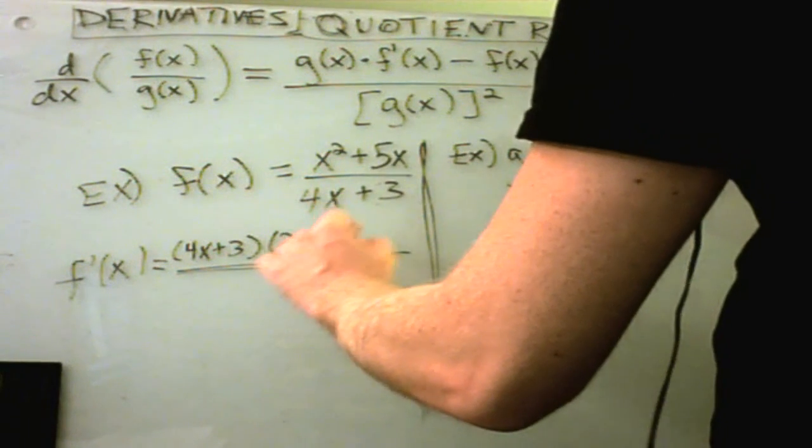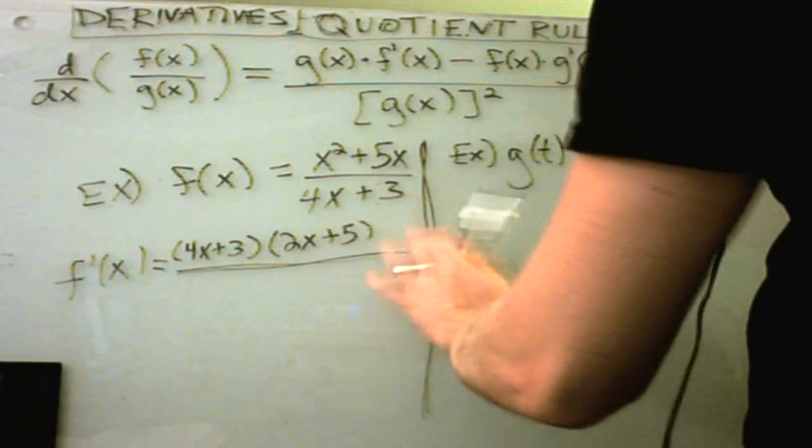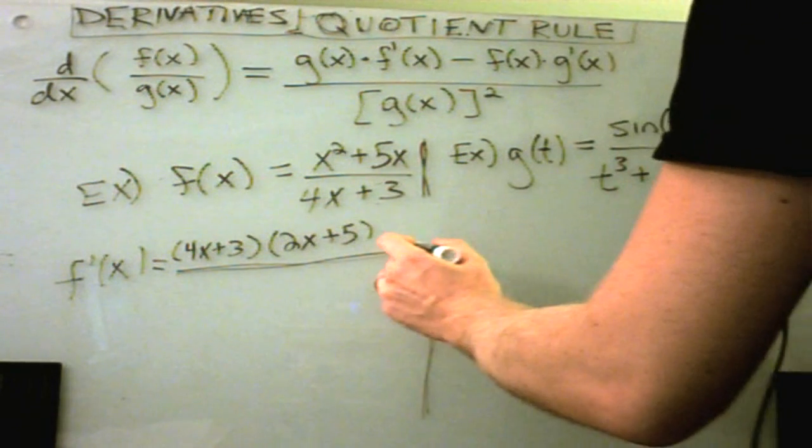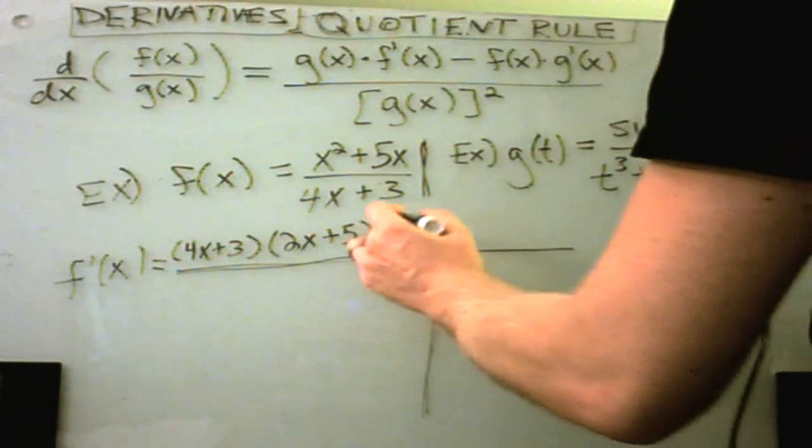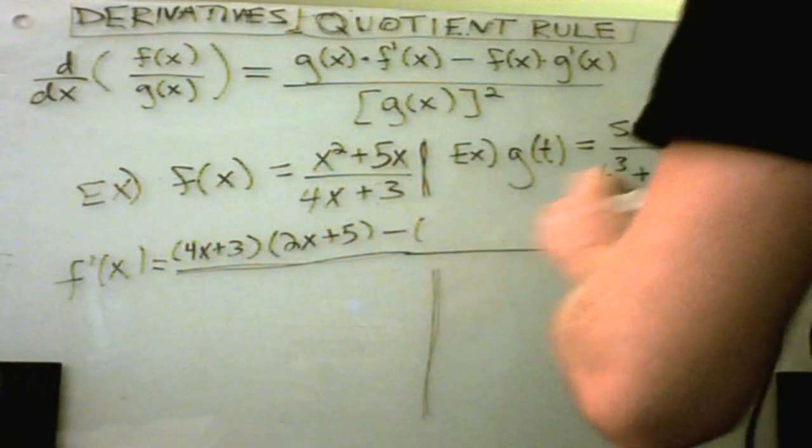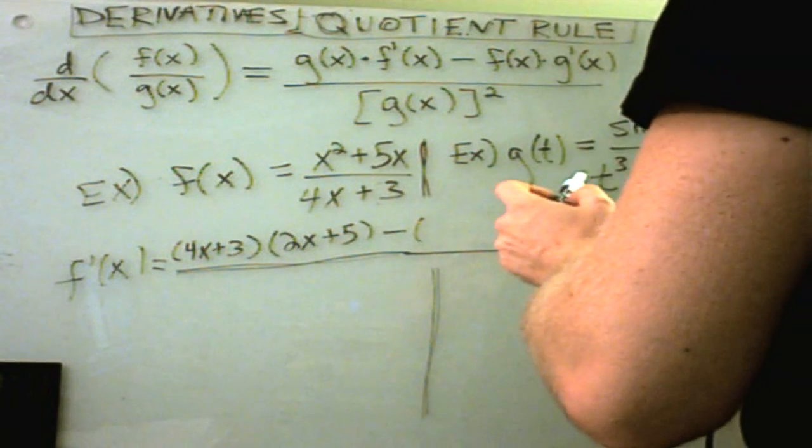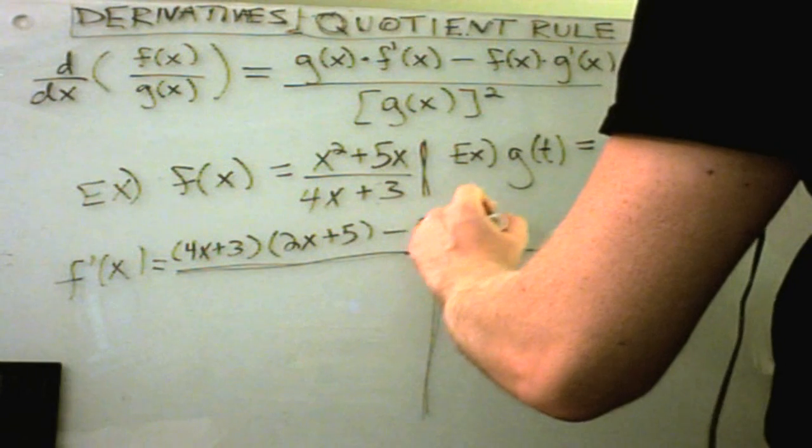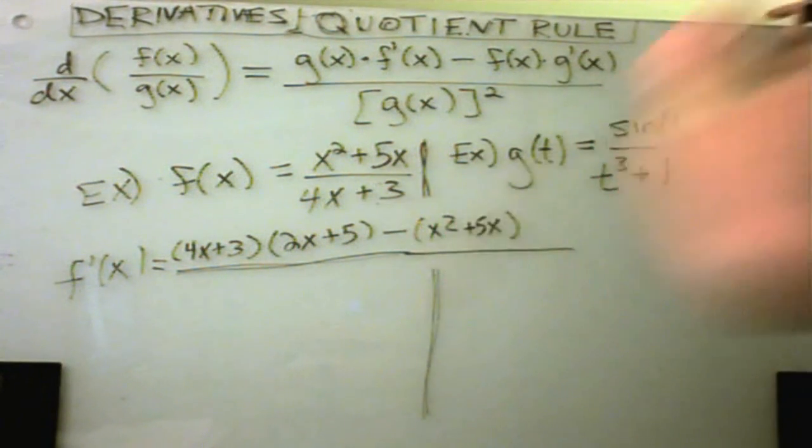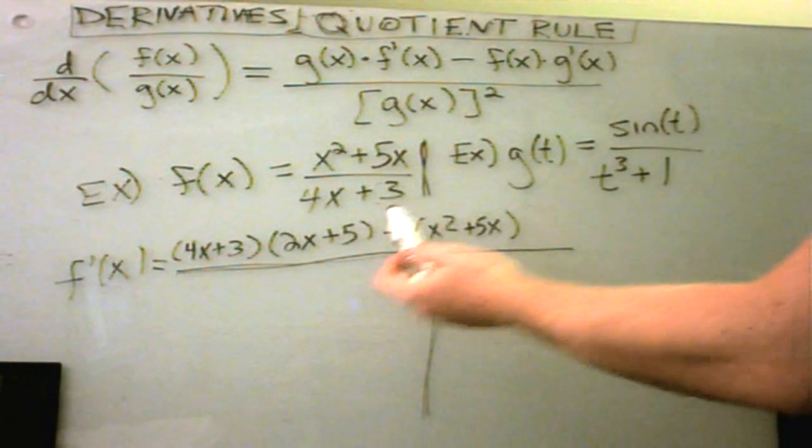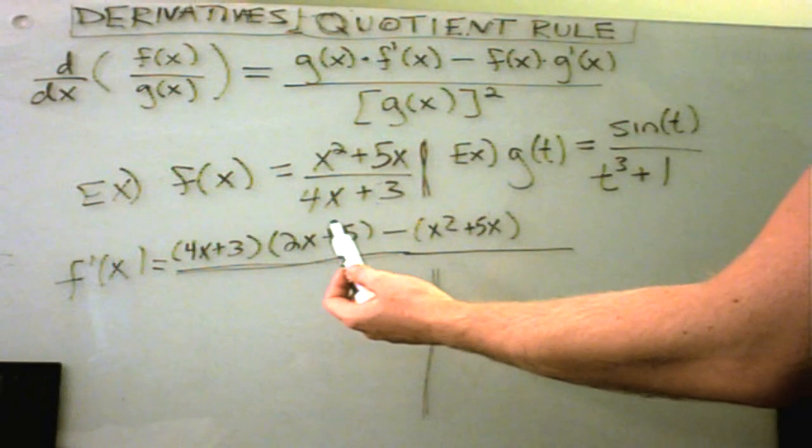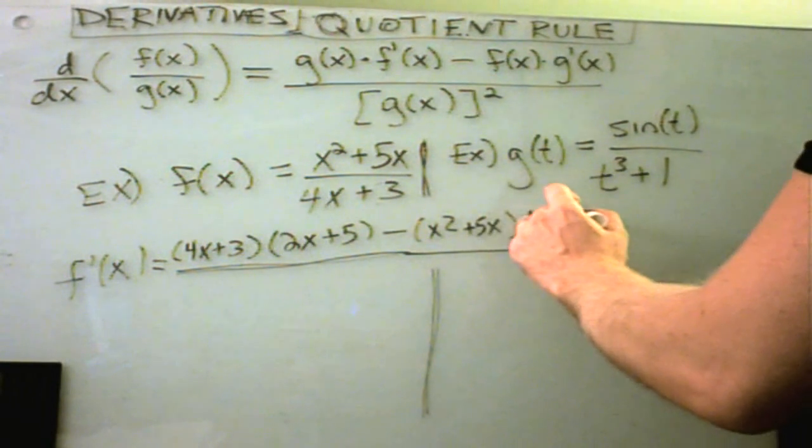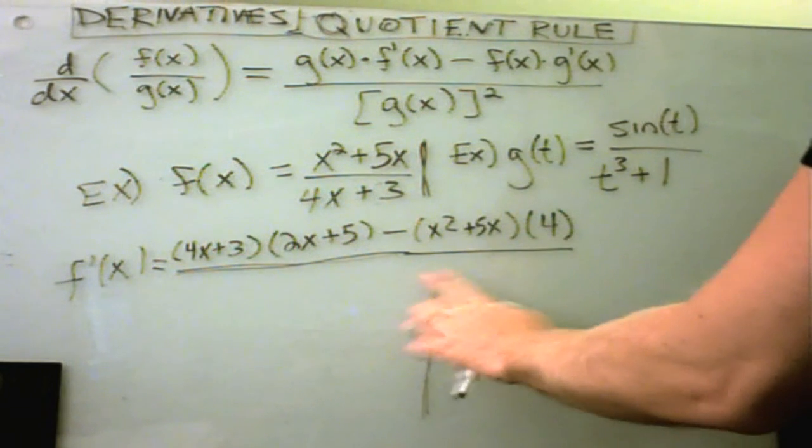The derivative of 5x will be 5. Better give ourselves some more room here. Quotient rule problems are always so long. I'll put my minus sign in between. Then it says we leave the numerator alone. So, x squared plus 5x. I'll just copy that right back down. And then, we take the derivative of the denominator. So, the derivative of 4x is simply 4. And the derivative of the positive 3 is 0. So, that'll just disappear.